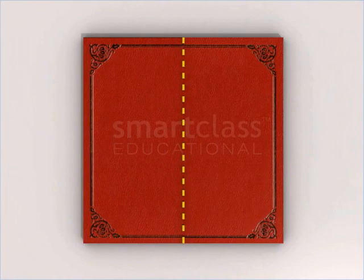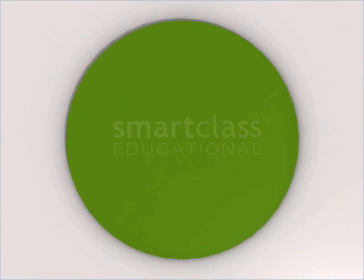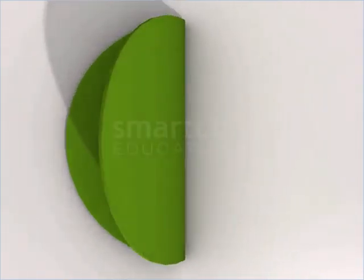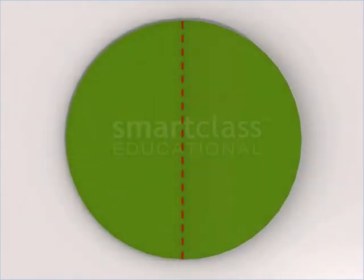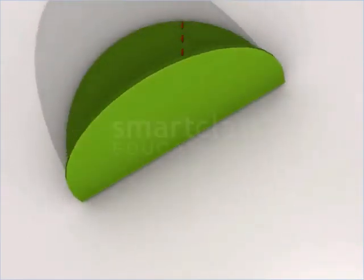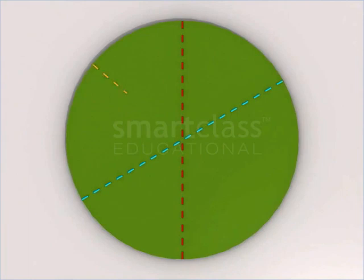A figure can have more than one line of symmetry. For example, this circle can be folded along this line, this line, or this line.